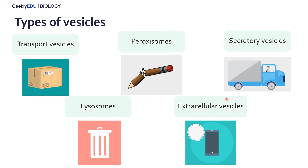Finally, we have secretory vesicles. These are vesicles that aim to bring molecules from within the cell to outside of the cell. This is really common in our neurons — for example, sending signals from one neuron to another.